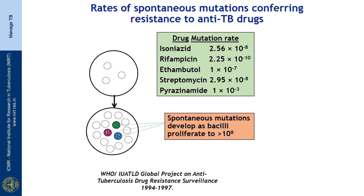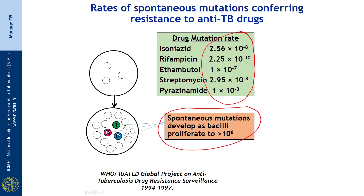This figure clearly shows the rates of spontaneous mutations conferring resistance to anti-TB drugs. Looking at isoniazid, rifampicin, and ethambutol, the mutation rates are different for different drugs. Spontaneous mutations develop whenever the bacterial count is very high — more than 10 to the power of 8.